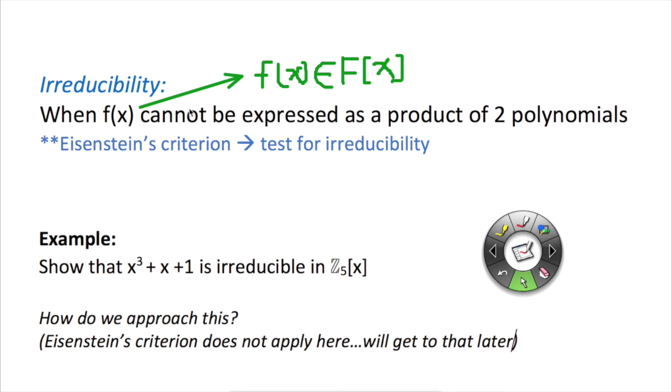So notice that one important condition for f(x) is that it has to be in the field. And this relates to Eisenstein's criterion because the Eisenstein creates a test for whether a polynomial is irreducible.